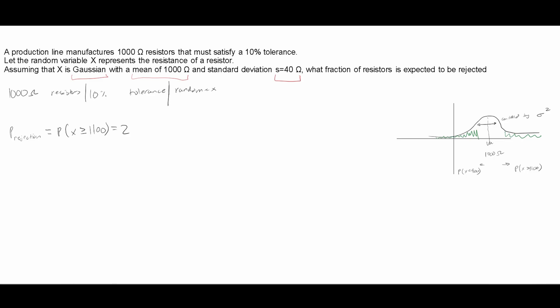Now, this is going to be equal to 2 times our Q value, right? So Q is going to be the 1,100 minus the mean, so 1,000 divided by 40.